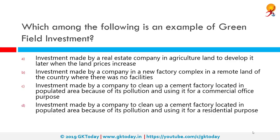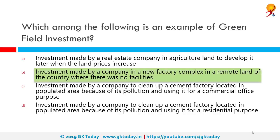Which among the following is an example of greenfield investment? The correct answer is investment made by a company in a new factory complex in a remote area where there were no facilities. A greenfield investment is a type of foreign direct investment where a parent company creates a subsidiary in a different country, building its operations from the ground up.